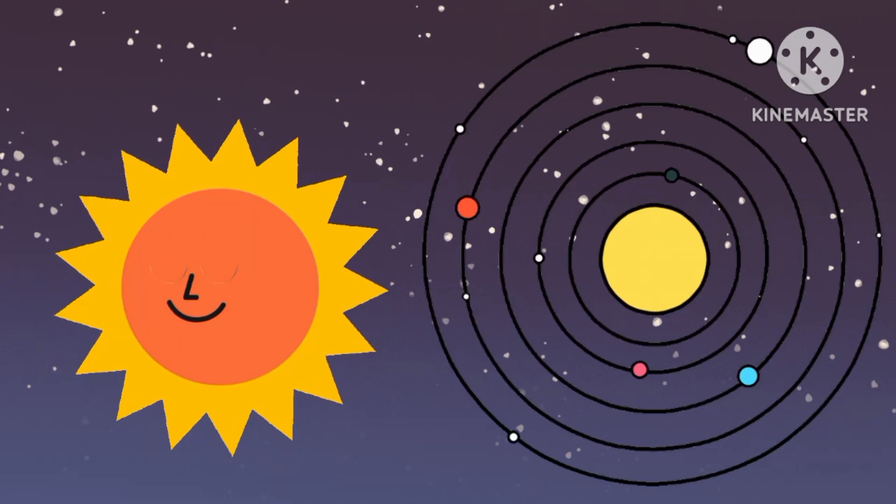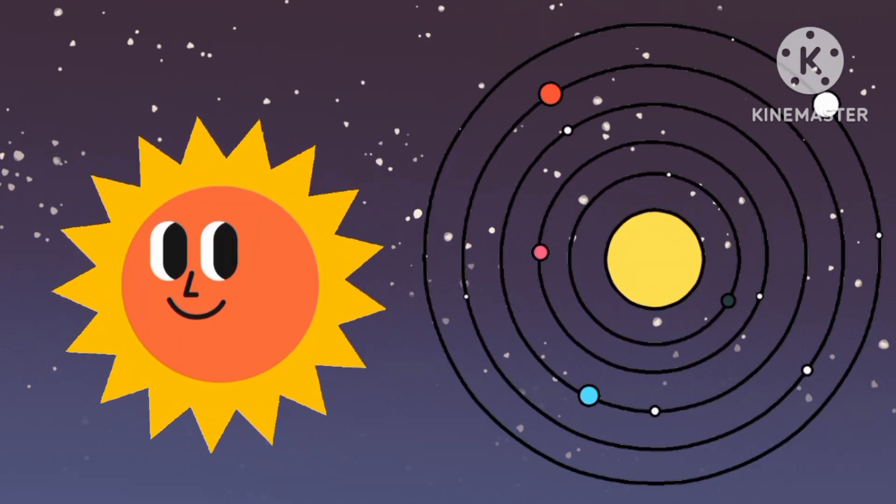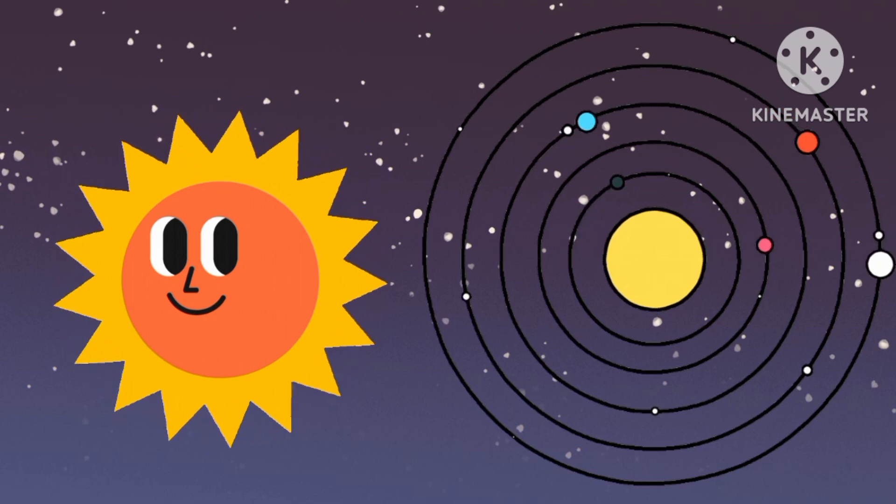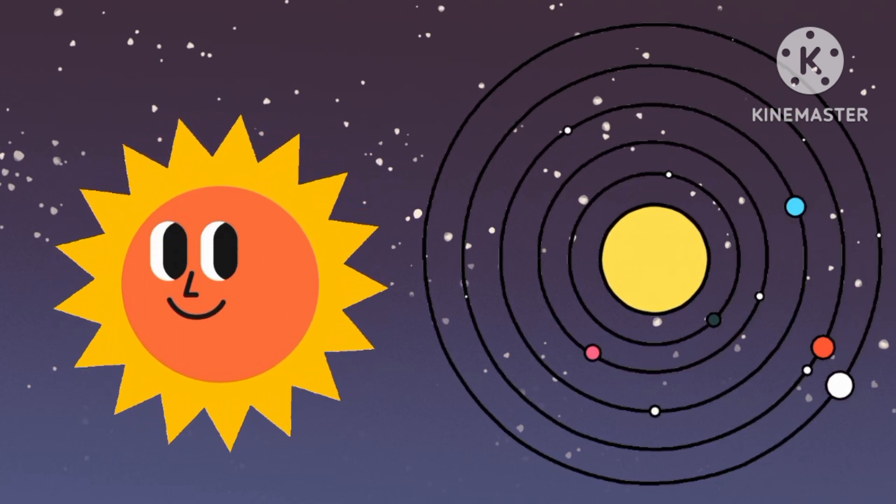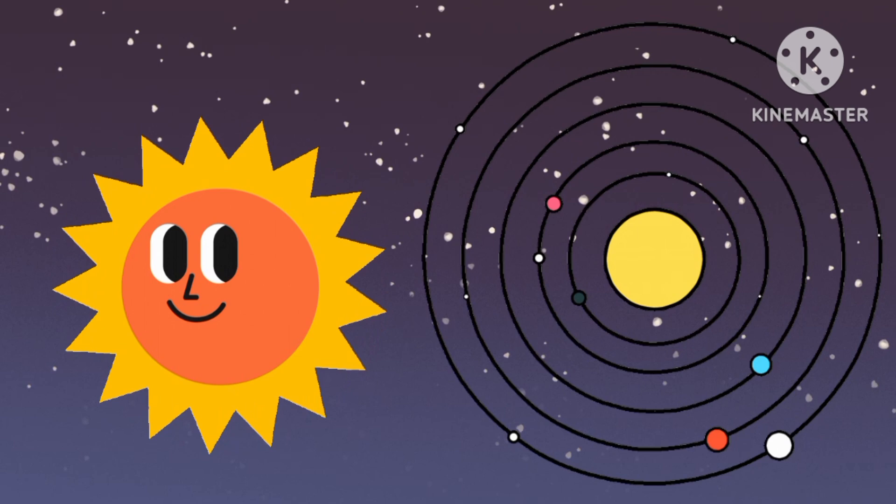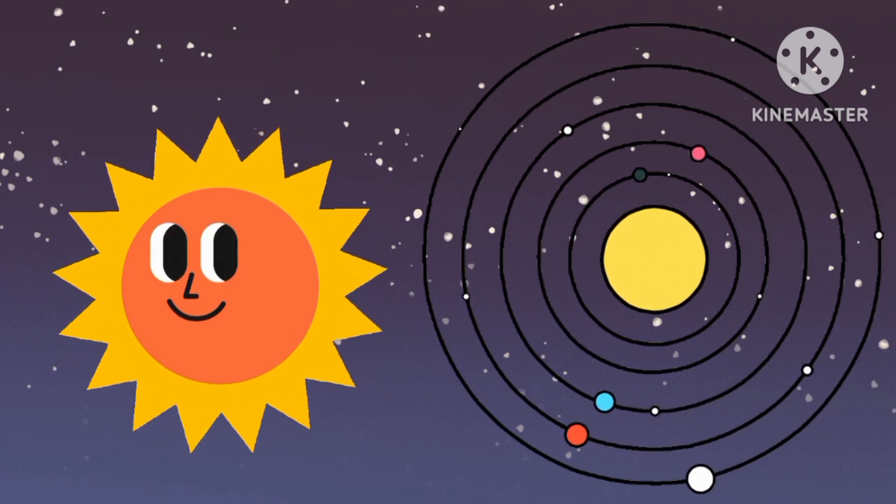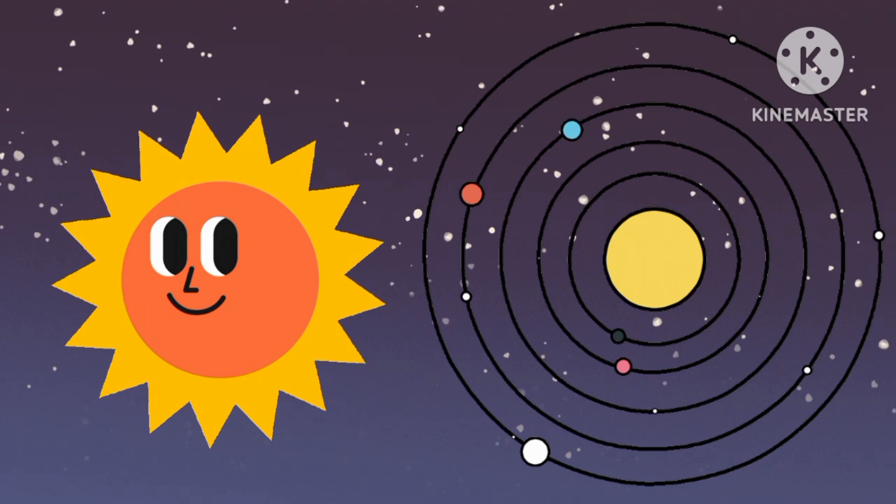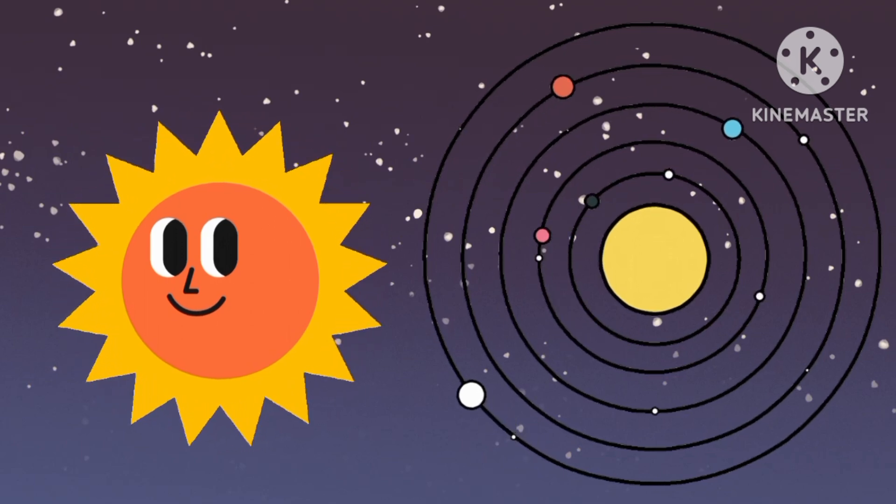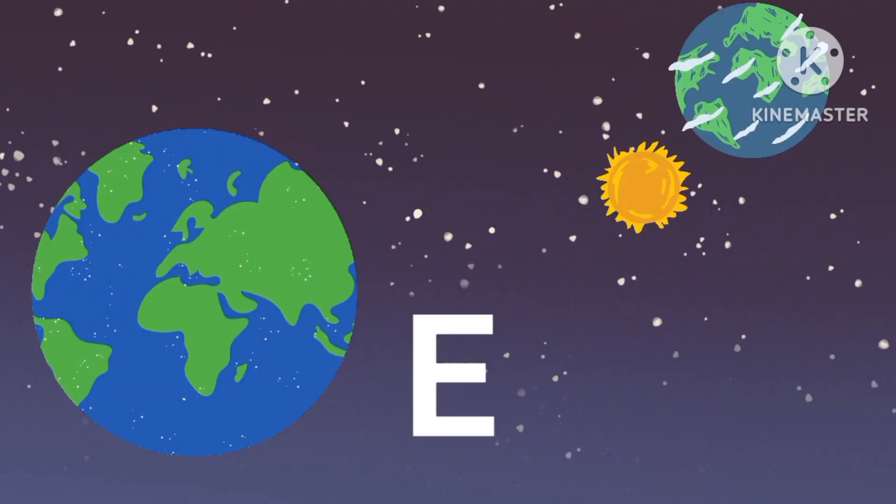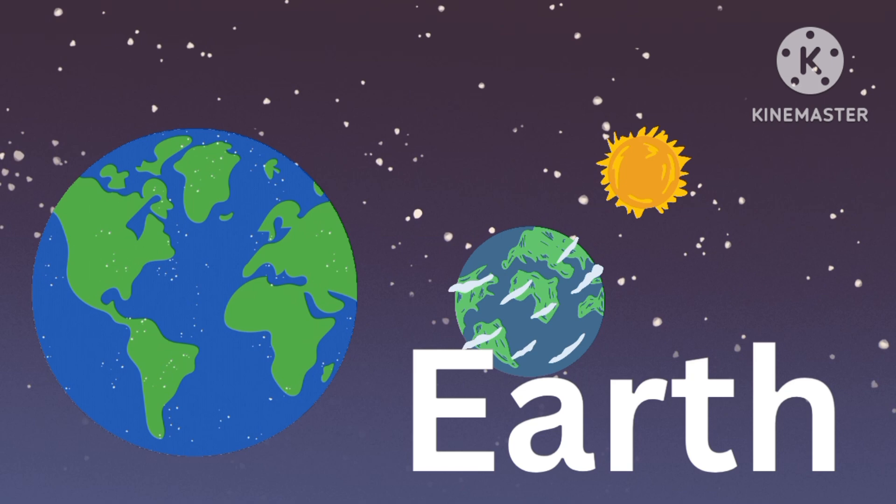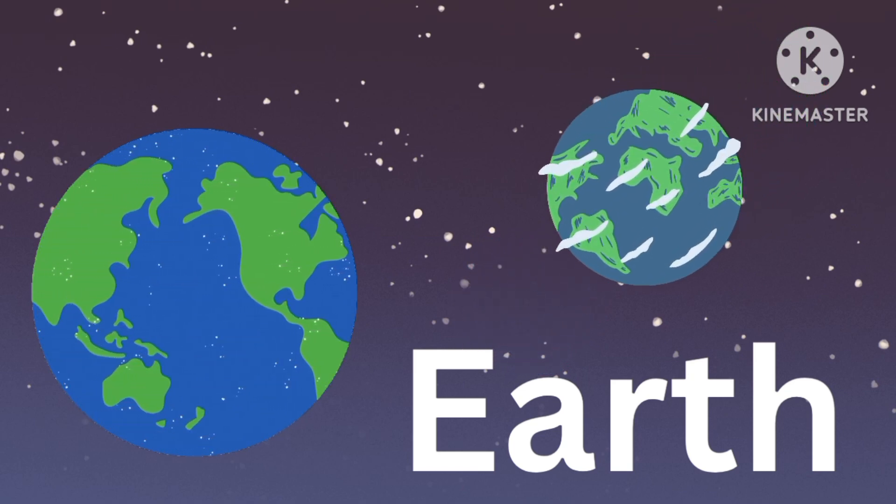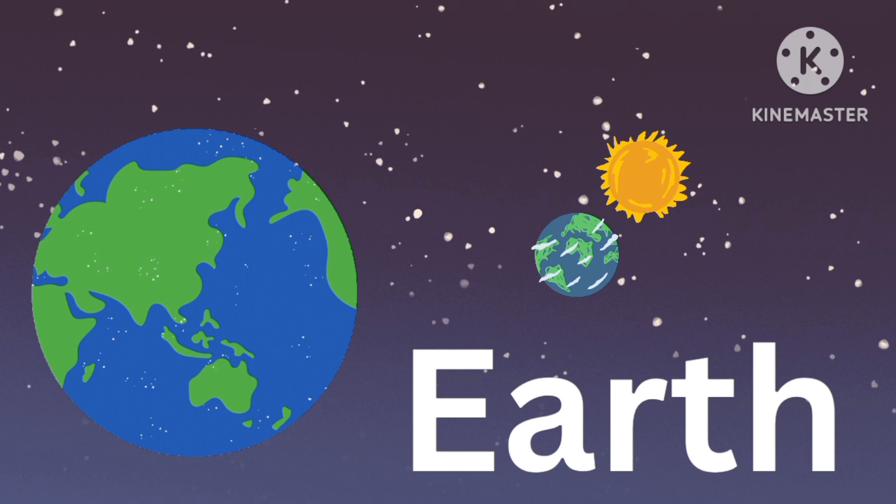The Earth is orbiting around the sun. It is the only planet in our solar system that can support life.